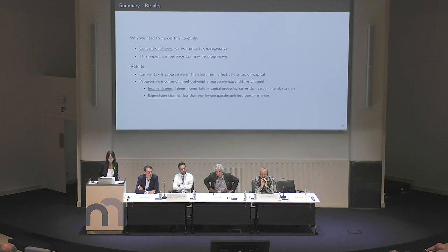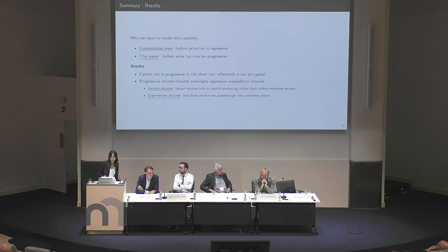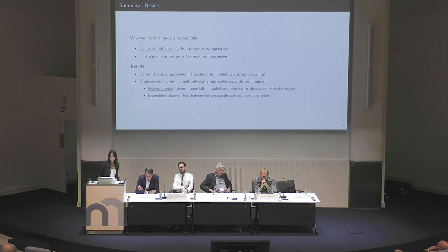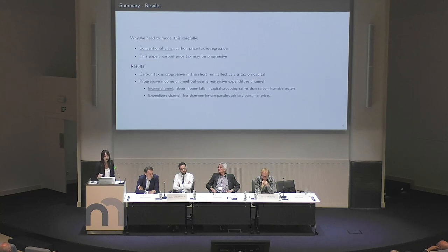High-income households are more adversely affected because the tax is essentially a tax on capital services. In the short run, the income channels are progressive: labor income falls, but this is concentrated in capital-producing sectors rather than carbon-intensive ones. High-income earners also derive a larger share of their income from capital. Low-income households are less likely to work in capital-producing sectors and more likely to work in service-oriented sectors. This outweighs the regressive expenditure channel that most studies capture. Even though poor households consume more carbon-intensive goods, there is actually low pass-through of the carbon tax into output prices in the short run. Capital owners absorb the effect initially, but over time through the putty-clay model, wages across sectors adjust and the capital stock becomes more energy-efficient, so the tax incidence across the income distribution flattens out.